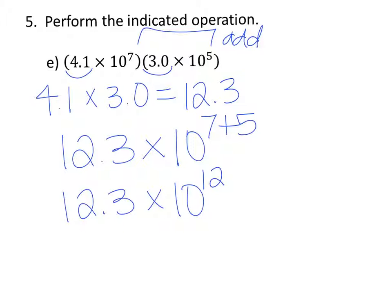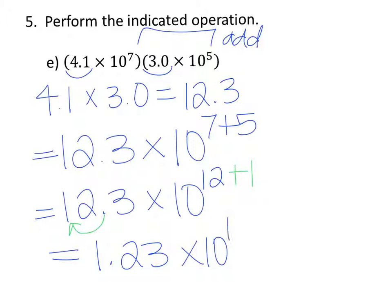But we know that this is not in scientific notation because 12.3 is not between 1 and 10. So we need to move the decimal 1 to the left. And if we move the decimal to the left 1, that means we need to increase the exponent by 1. So then the final answer will be 1.23 times 10 to the 13th power.